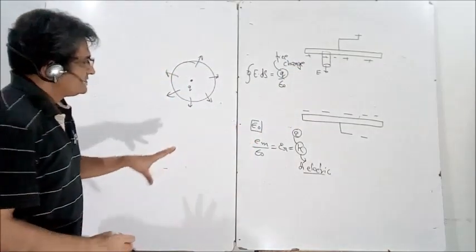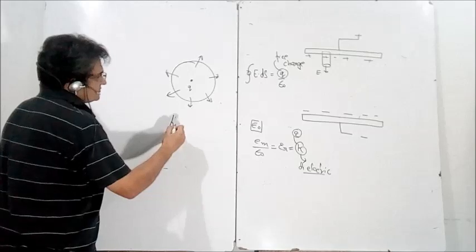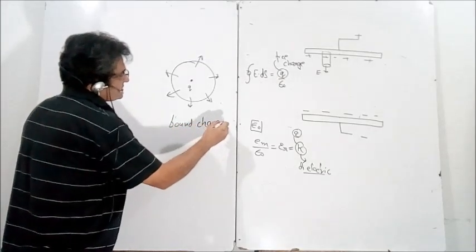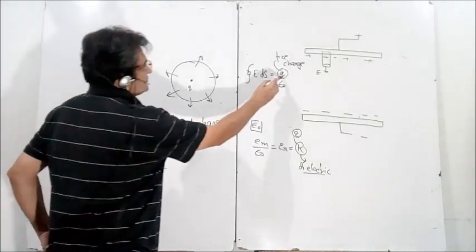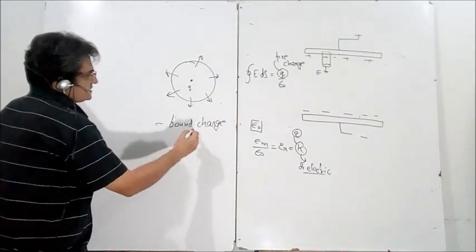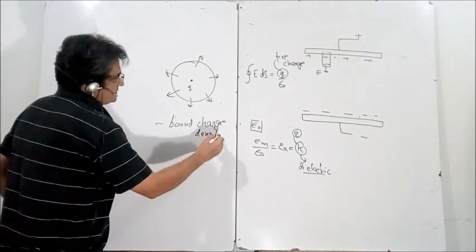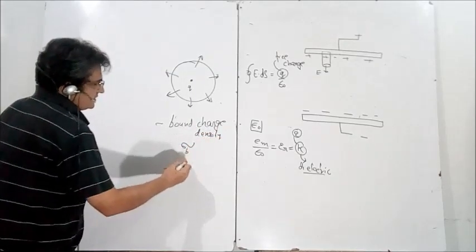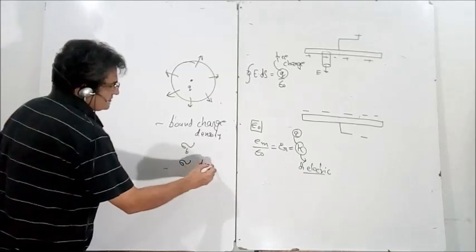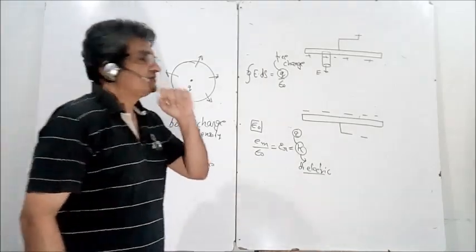You will notice that in books there is something called bound charge, which is different from free charge. The bound charge density is written as Sigma_B, and the free charge density is written as Sigma. Charge density is simply charge divided by the surface area.